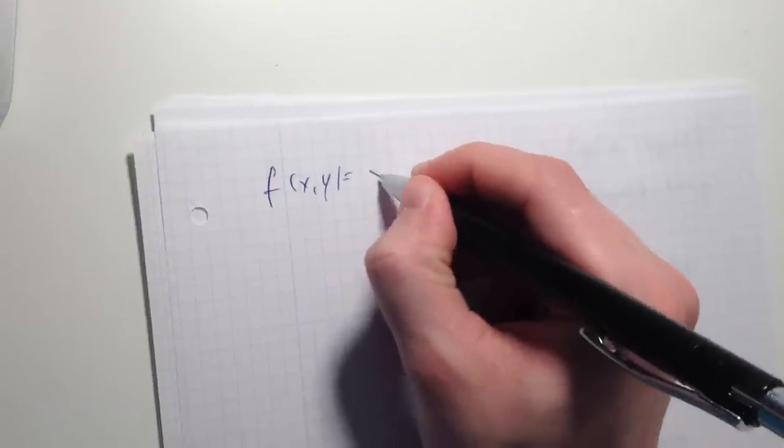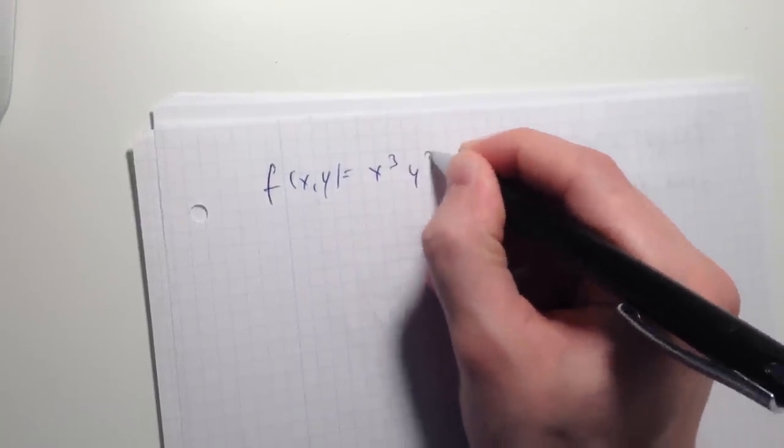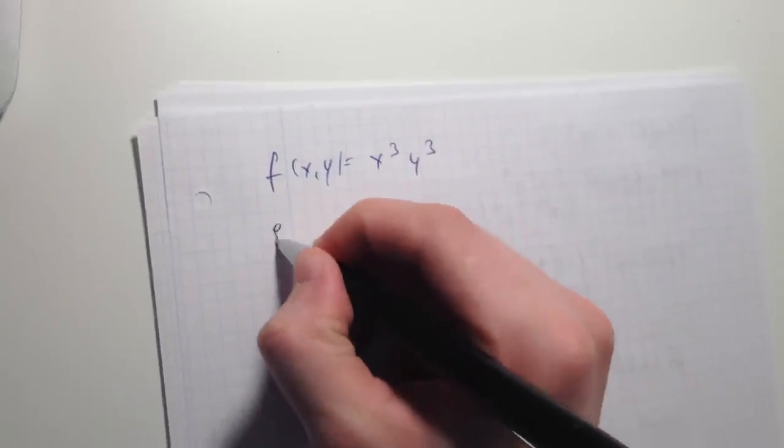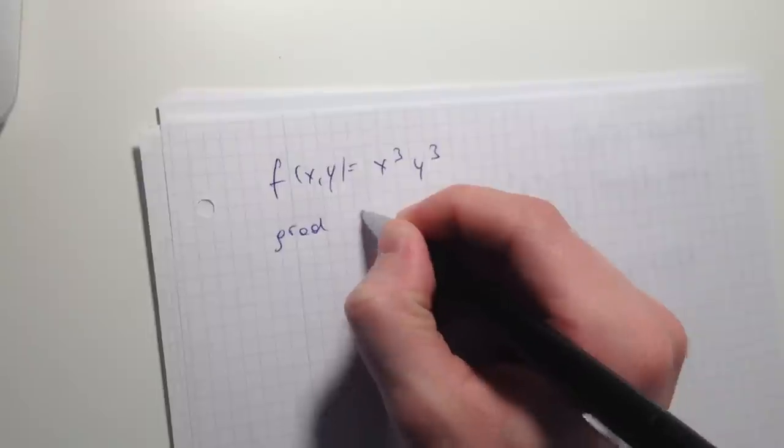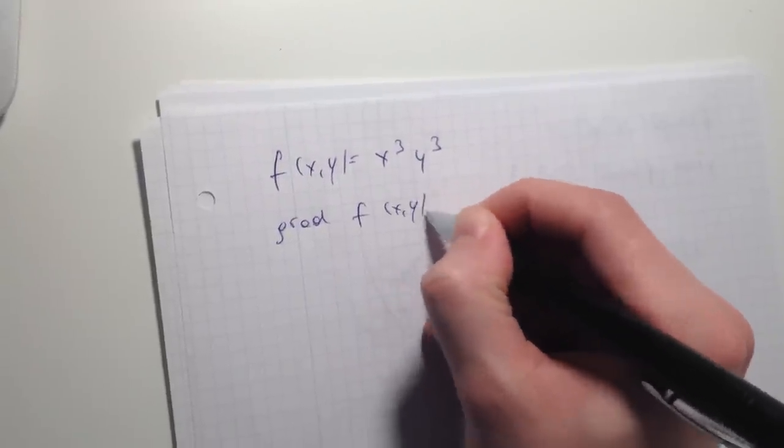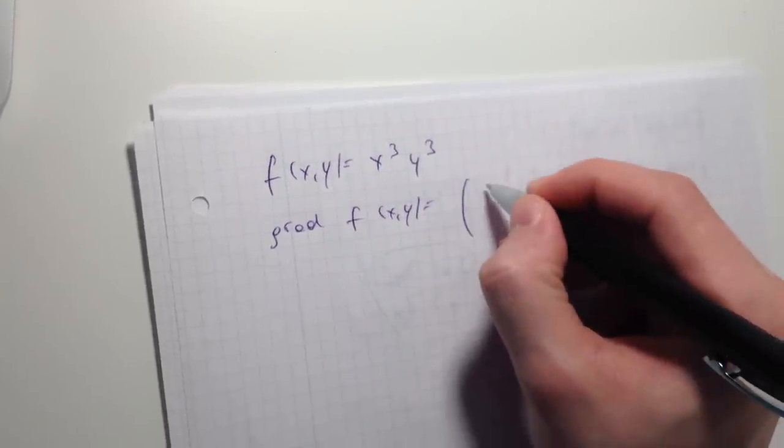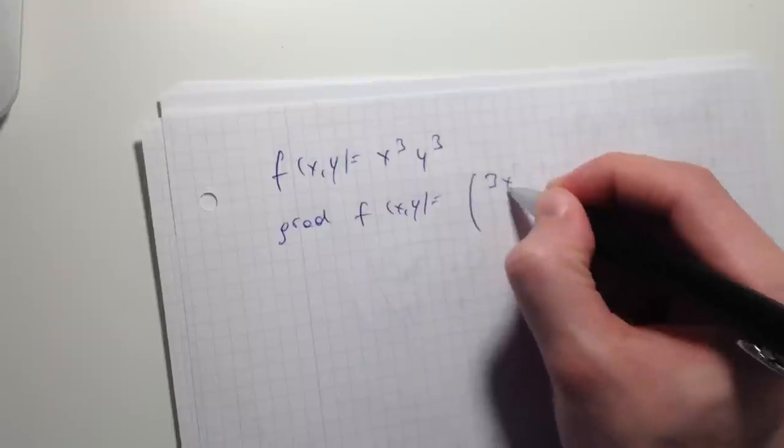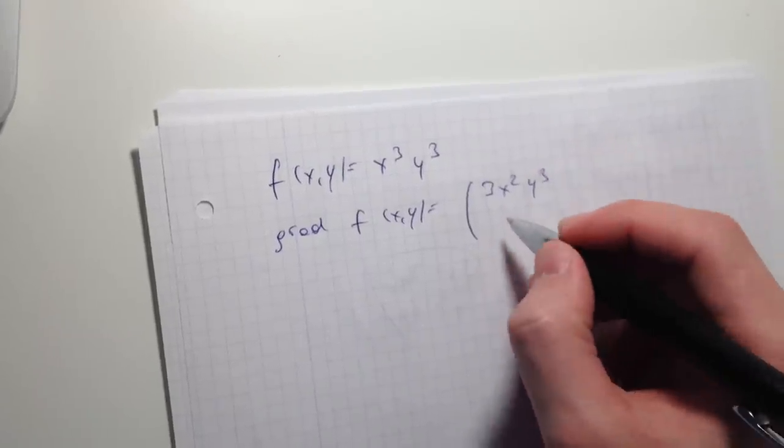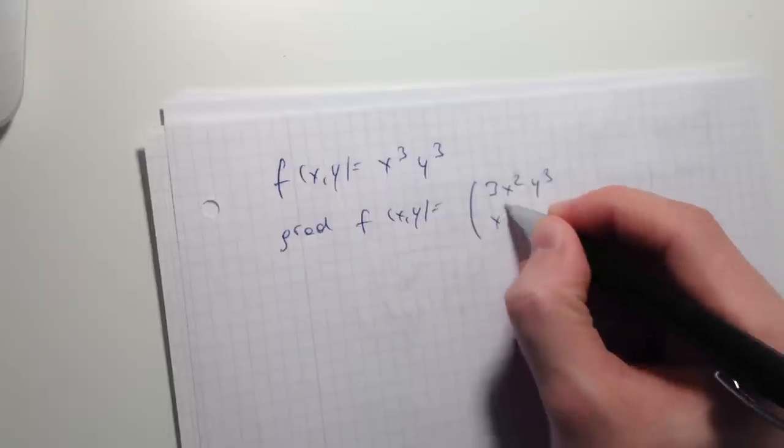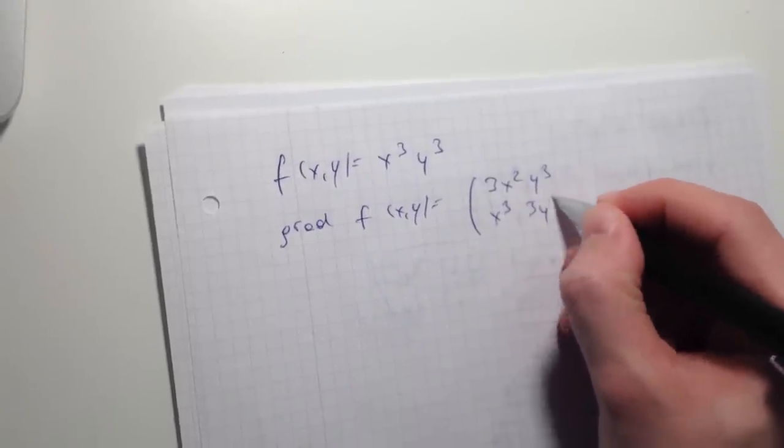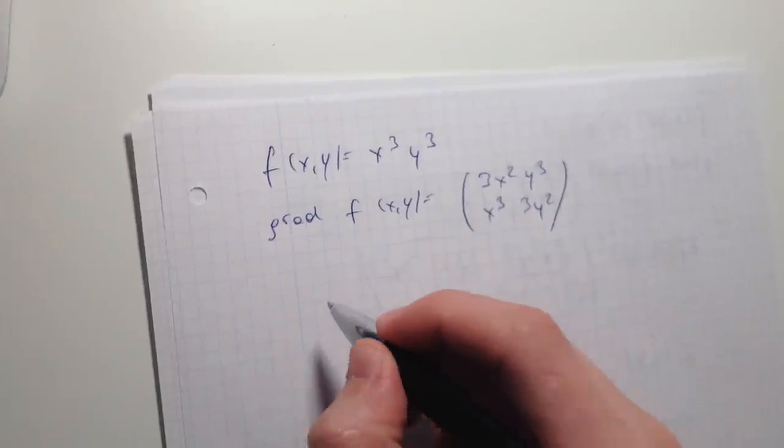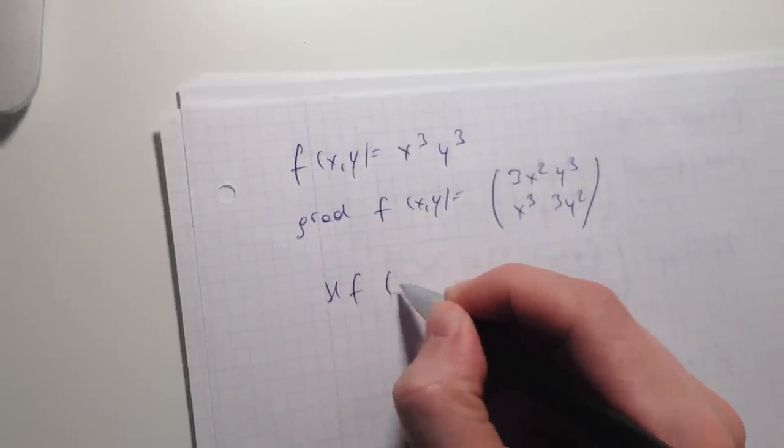If you have like x to the power 3 and y to the power 3, first you have to find the gradient of this function. It's going to be 3x to the power 2, y to the power 3, and x to the power 3, 3y to the power 2. So now you have to find the Hessian matrix of this function.